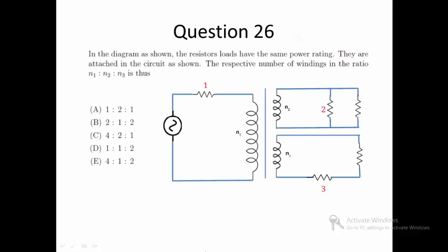Question 26. In the diagram as shown, the resistor loads have the same power rating. They are attached in the circuit as shown. The respective number of windings in the ratio N1 to N2 to N3 is thus which of the following options.